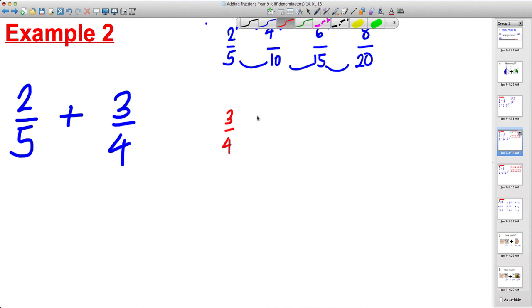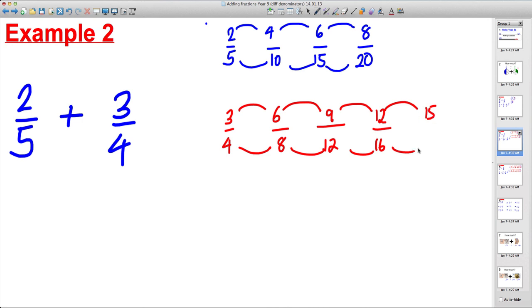I imagine 4 goes into 20, so we might be able to do this. Up in 3 here would be 6. Up in 4 here would be 8. Up in 3 again would be 9. Up in 4 would be 12. Up in 3 would be 12. Up in 4 would be 16. And up in 3 would be 15. And lastly, up in 4 would be 20.